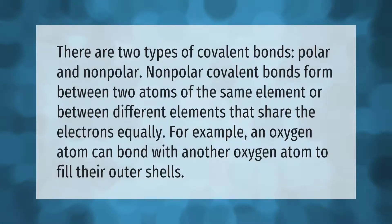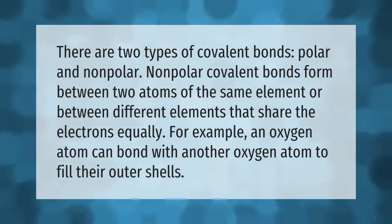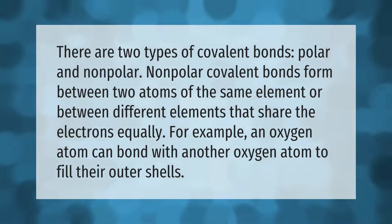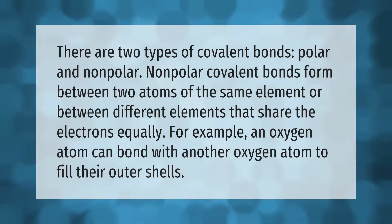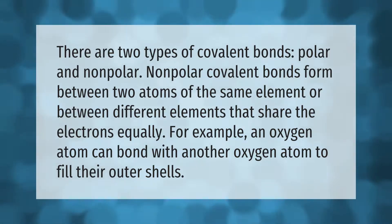There are two types of covalent bonds: polar and non-polar. Non-polar covalent bonds form between two atoms of the same element, or between different elements that share the electrons equally. For example, an oxygen atom can bond with another oxygen atom to fill their outer shells.